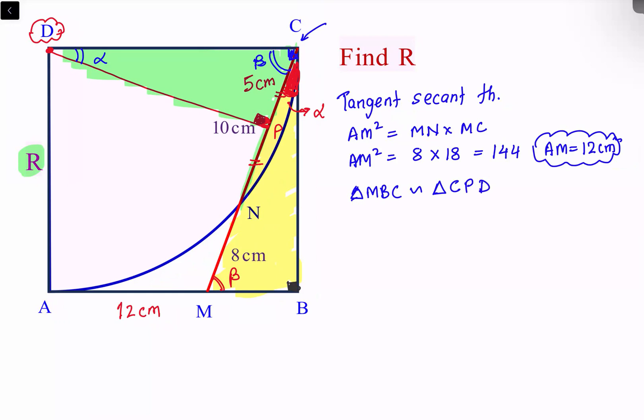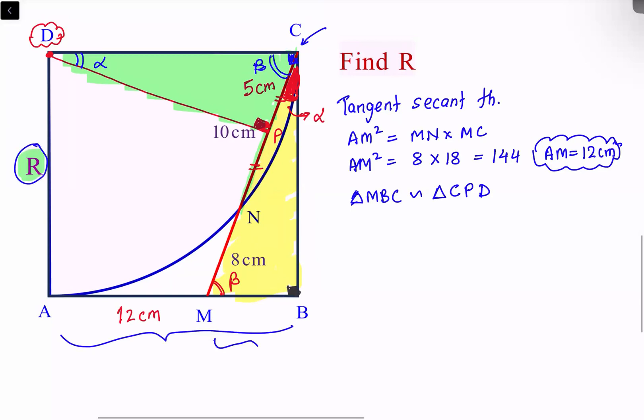If we see this full length, it is the same as R. So when we talk about MB, MB is R minus 12. And BC will be the same as R. So we have got all the sides of the yellow triangle.